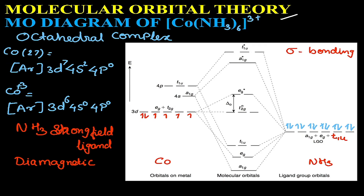Today we will be discussing molecular orbital theory. Under MOT, we will be discussing MO diagrams of the Co(NH3)6^3+ complex and the CoF6^3- complex. Both these complexes are octahedral; the only difference is that ammonia is a strong field ligand while fluorine is a weak field ligand.